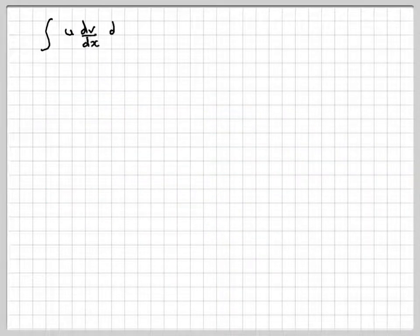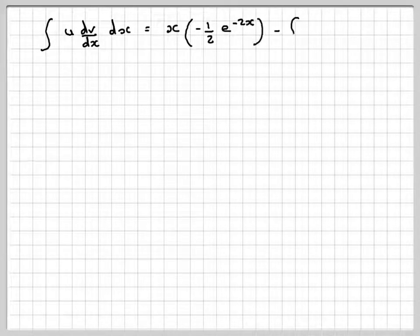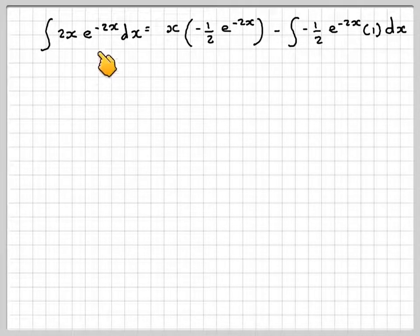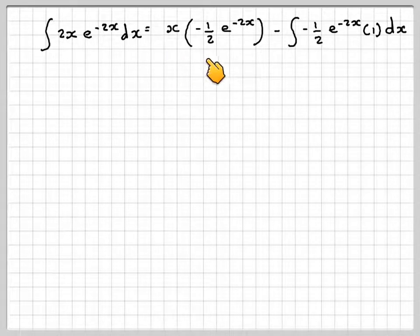Writing that out again: we've got x e to the minus 2x equals x times minus a half e to the minus 2x, minus the integral of minus a half e to the minus 2x dx.